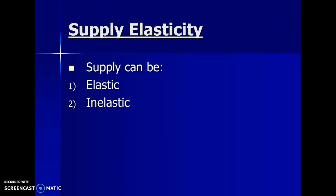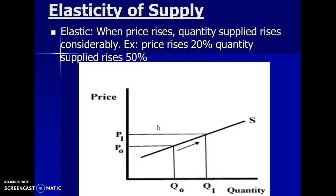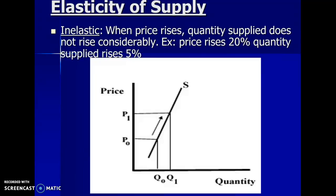The law of supply tells us that as price goes up, supply goes up, but it doesn't tell us how much supply goes up. Elasticity tells us exactly how much supply goes up when the price goes up. Supply can be elastic or inelastic. If it's elastic, when prices rise, the supply rises considerably — that's a big rise, shown by a more horizontal curve. Inelastic supply is the opposite: prices rise but there's not much change in supply.